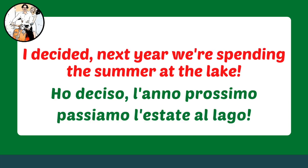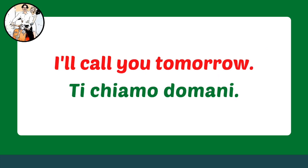'I decided — next year we're spending the summer at the lake' in Italian is 'Ho deciso. L'anno prossimo passiamo l'estate al lago.' And 'I'll call you tomorrow' is 'Ti chiamo domani.' It's as simple as that. Good news number two.